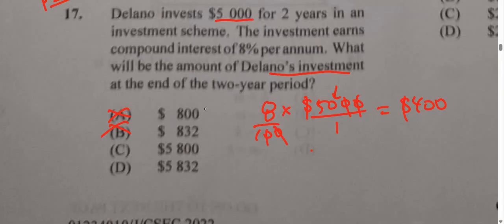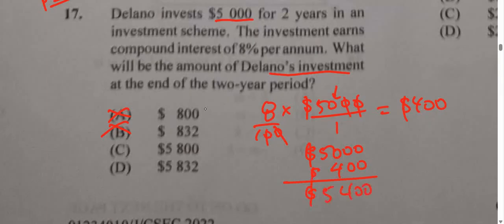The new amount going into the second year includes the original investment of $5,000 and the interest gained from the first year, $400. So the new amount going into the second year is $5,400.